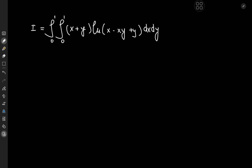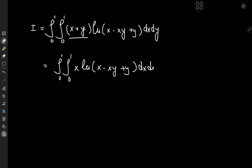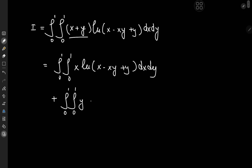How exactly do we approach this? We're going to make use of some symmetry, and that symmetry will become clear once I multiply out the x plus y term. Carrying out the multiplication, I now have the double integral from 0 to 1 of x times the natural logarithm of x minus xy plus y, dx dy, plus the double integral from 0 to 1 of y times the natural logarithm of x plus y minus xy, dx dy.